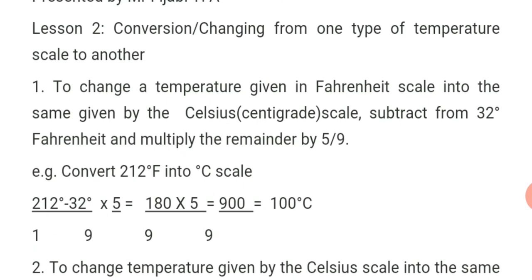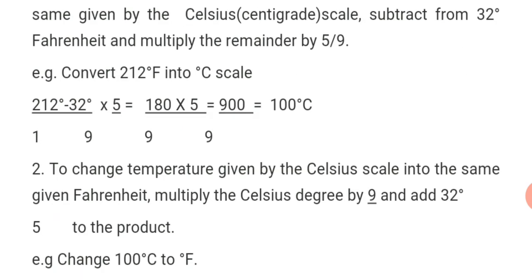For example, convert 212 degrees Fahrenheit into Celsius scale. That is: 212 degrees minus 32 degrees, multiplied by 5 over 9. When you subtract 32 from 212, it gives 180 degrees. Multiplying 180 by 5 over 9 gives 900 divided by 9, which equals 100 degrees Celsius.